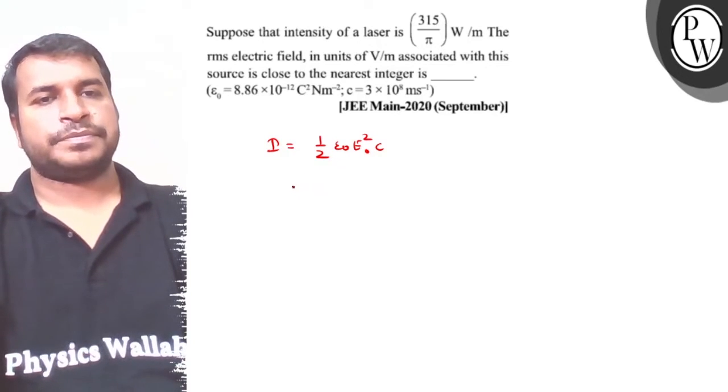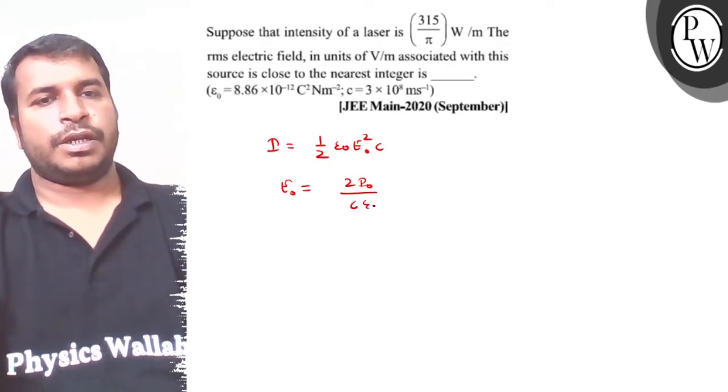So this is how much the value of E naught is, that is, 2I naught upon c into epsilon naught.